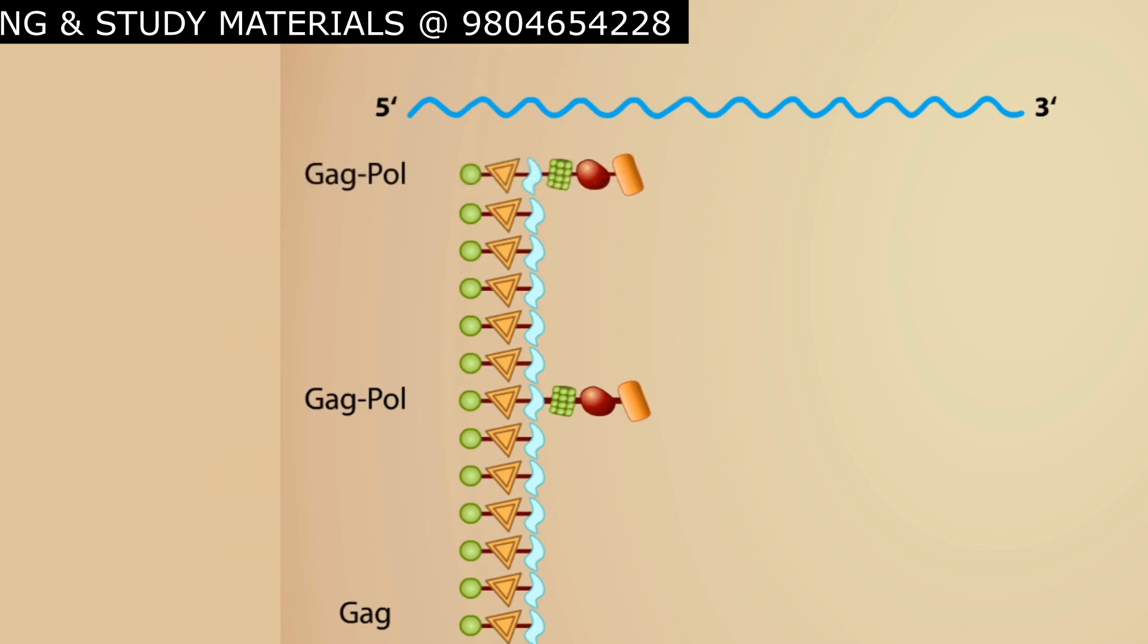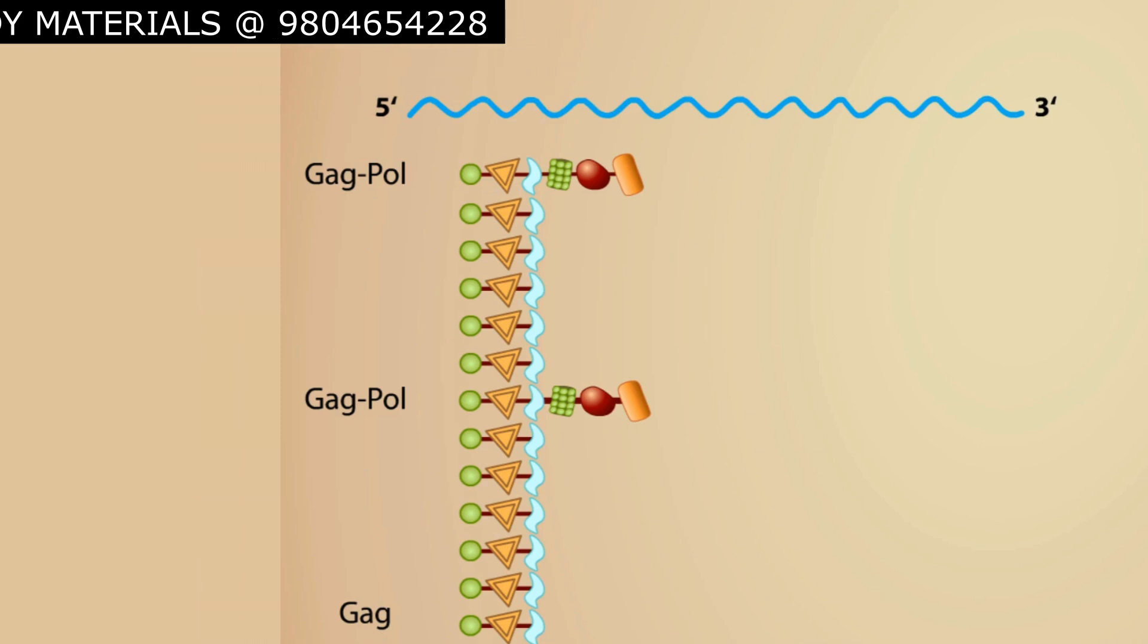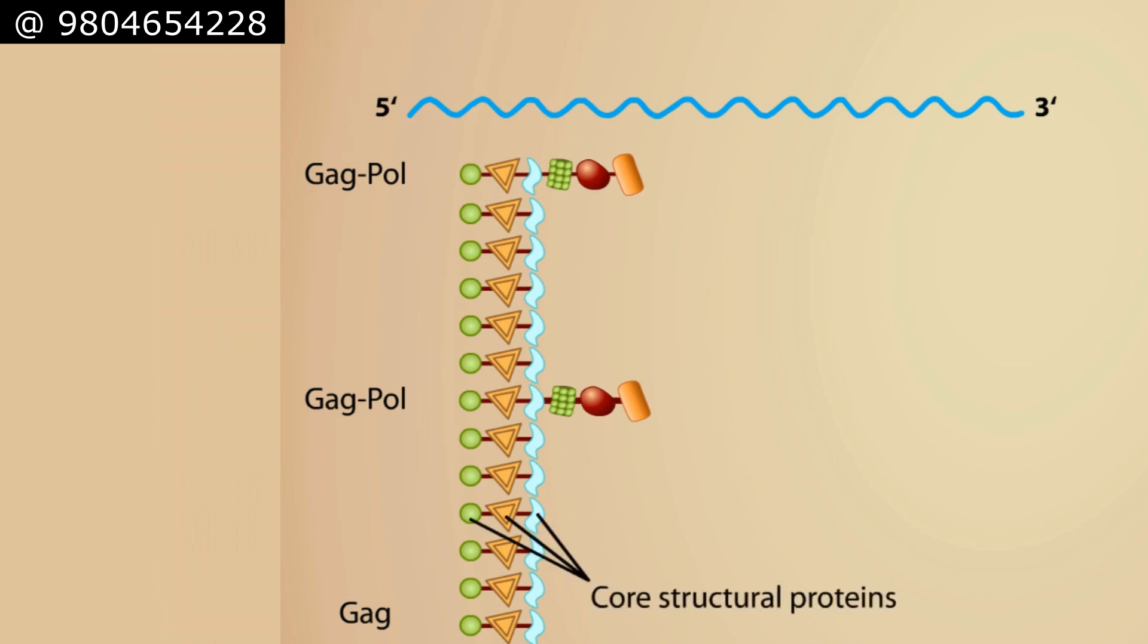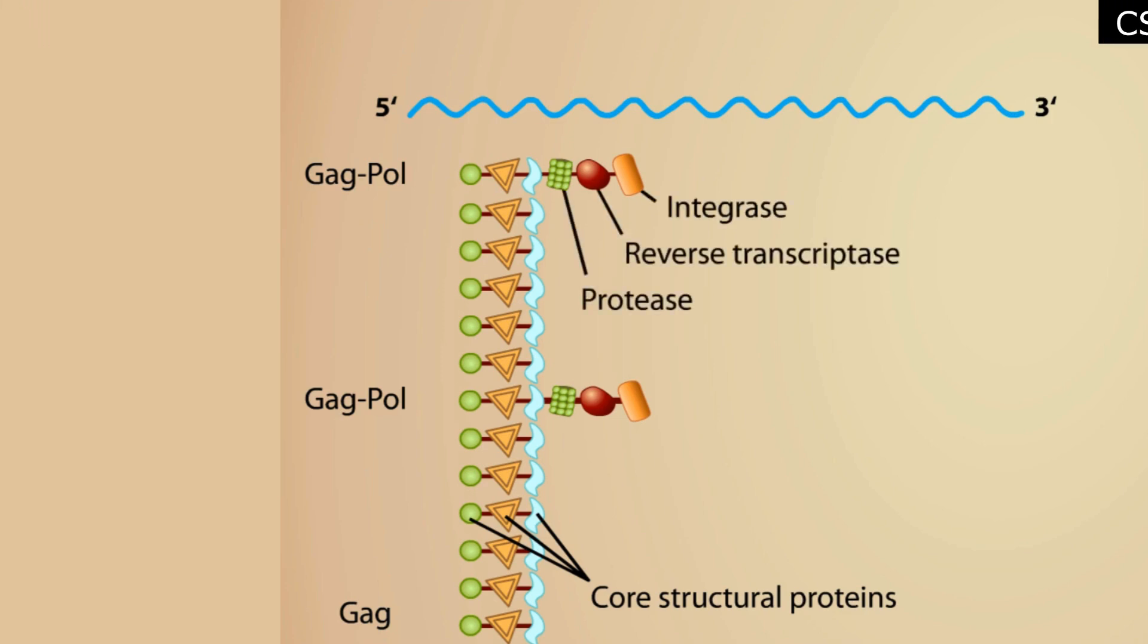The GAG and GAG-POL proteins are known as polyproteins because later, each will be cleaved to yield a number of distinct proteins. The GAG consists of core structural proteins which are needed in abundance for the production of new virions, where the GAG-POL contains core proteins plus enzymes: reverse transcriptase, integrase and protease.